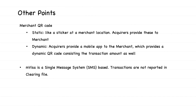A few other points to touch upon: the merchant QR code can either be static or dynamic. A static QR code is typically a sticker pasted at a merchant location provided by the acquirer, or the acquirer can provide a mobile application to the merchant which generates a dynamic QR code. In case of a static QR code, the customer has to enter the transaction amount manually, whereas with a dynamic QR code, the transaction amount is embedded in the QR code. MVISA is a single-message-based system, meaning all transactions happen in real-time and are not reported in a clearing file to the issuer. The issuer needs to receive these transactions in the raw file and create a process to post transactions to the respective accounts.